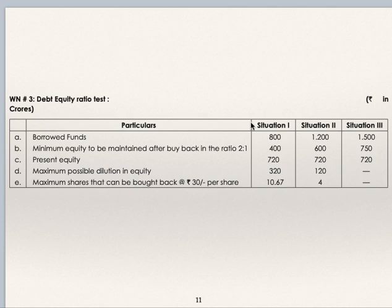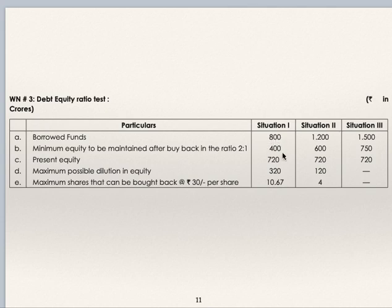Next is the debt equity ratio test. We will see this for 3 situations. In situation 1, borrowed funds are 800 crores (given in balance sheet). In situation 2, borrowed funds are 1200 crores. In situation 3, borrowed funds are 1500 crores. After buyback, debt-to-equity should be 2:1, so equity should be at least half of borrowed funds. In situation 1, minimum equity to be maintained is 400 (half of 800). In situation 2, minimum equity is 600 (half of 1200). In situation 3, minimum equity is 750 (half of 1500).